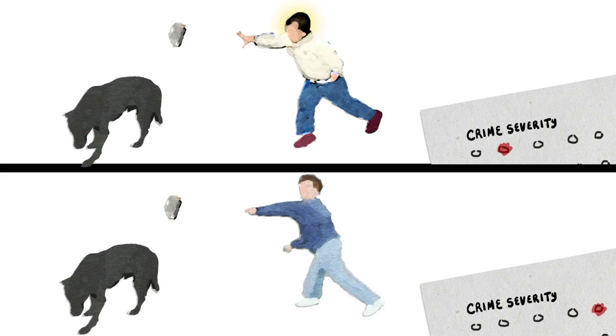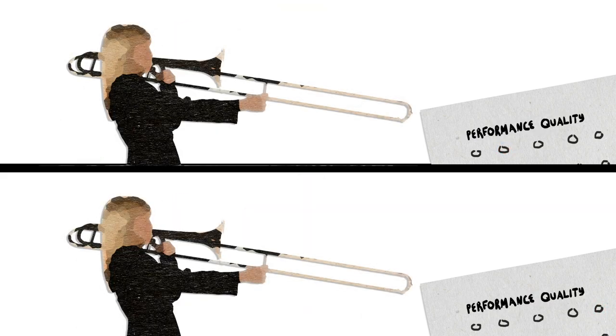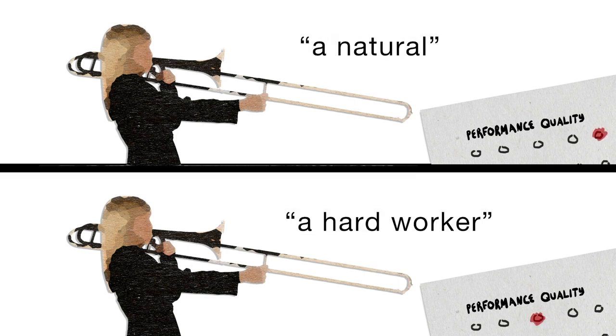Now, when it comes to judging the brightness of objects, the errors seem pretty harmless. But research shows that we also see the exact same action as being less bad if the perpetrator is attractive. We rate the same musician as more masterful if she's described as a natural rather than a hard worker. These illusions are more costly.